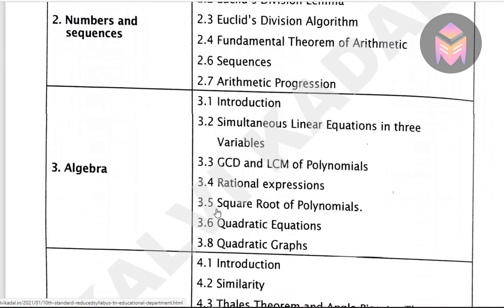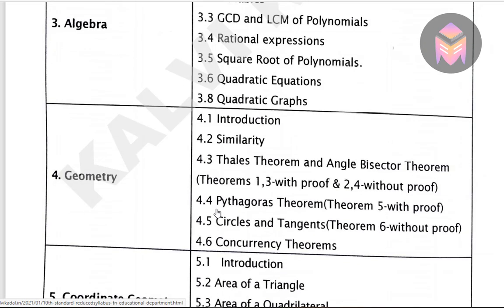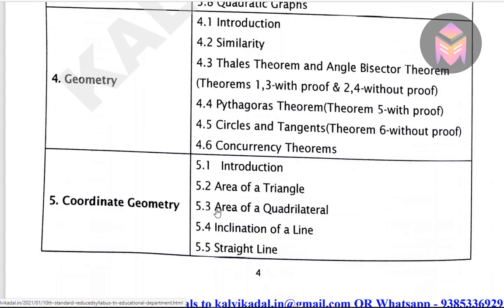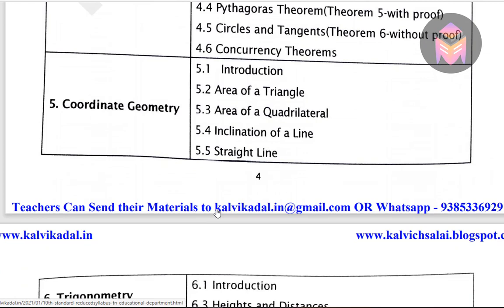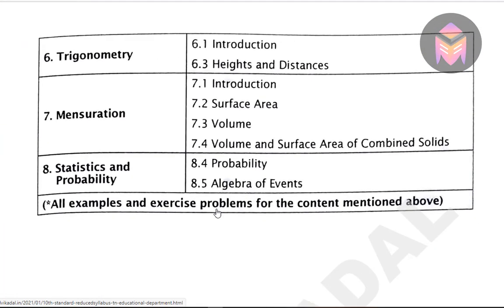You can see Algebra — sections 3.6 and 12. Next is Geometry — you can see 4.1 and 4.6. Next is Coordinate Geometry — you can see headlines and questions. Next is sections 6.1 and 6.3, then 7.1 and 7.4. You can see Statistics and Probability.